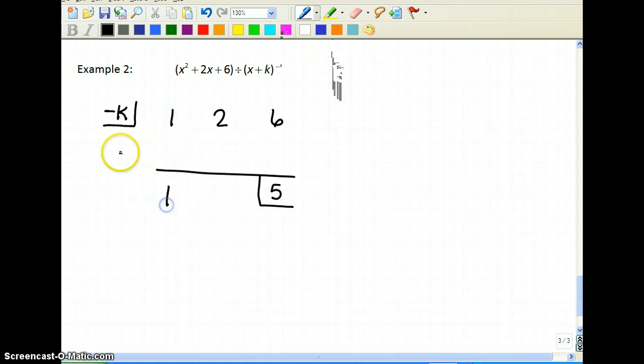So we bring down the 1. So we multiply. Negative k times 1 is negative k. Now we add. That would be 2 minus k.